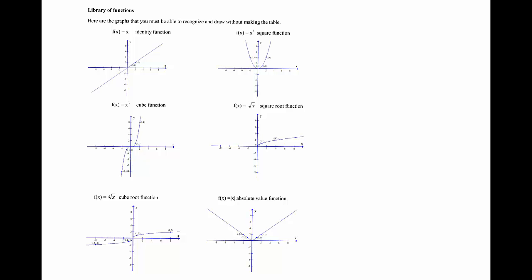The square root function f(x) = √x, cube root function f(x) = ∛x, and absolute value function f(x) = |x|.